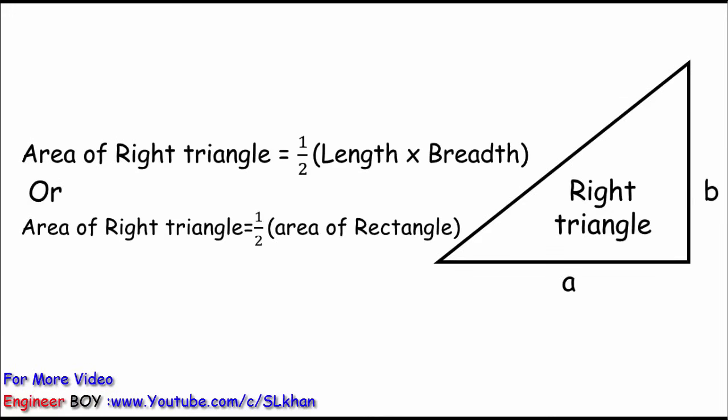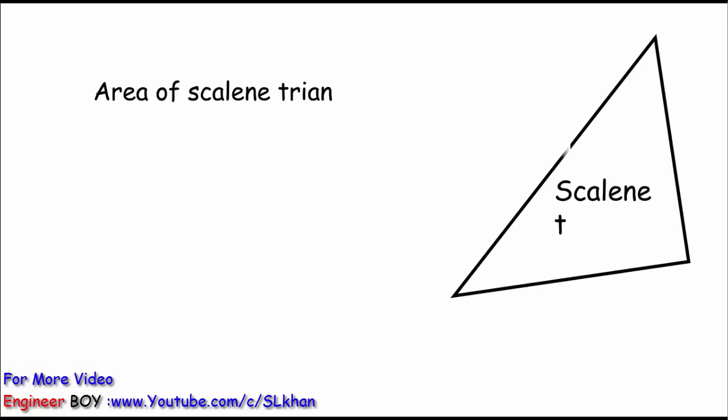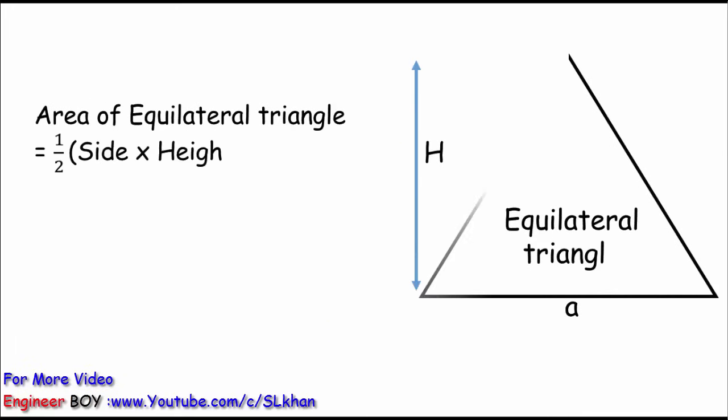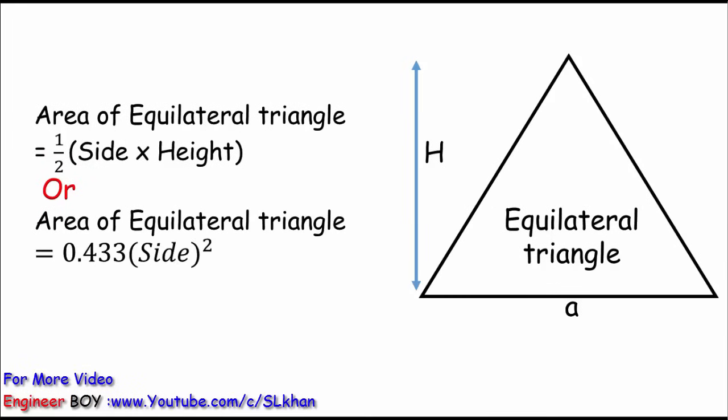Area of a scalene triangle can be calculated with the help of Hero formula, which I'm going to explain later. Area of an equilateral triangle can be found by one half times base times height, or 0.433 times its side squared.